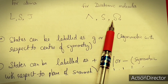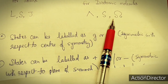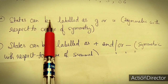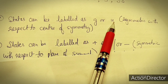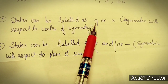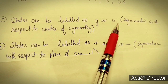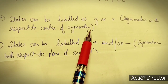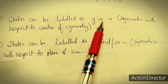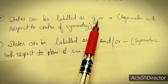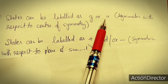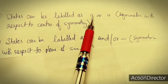The terms or states can be labeled as G or U as a subscript, meaning symmetric or antisymmetric with respect to the center of symmetry. We have already used these subscript labels in ground state terms of transition metal complexes and atomic terms.